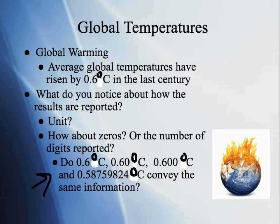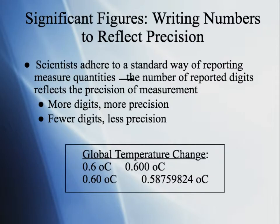The number of significant figures given in a measurement is going to be a reflection of how precise a calculation has been made. When they say the average global temperature has risen by 0.6 degrees Celsius, that's only one significant figure — we can only be precise to one sig fig. That's much different than 0.58759824, and to be that precise in average global temperature would not be realistic. The number of digits reported in a measurement is very important, especially when doing calculations, because we want to reflect however many significant figures there are in the original measurements.